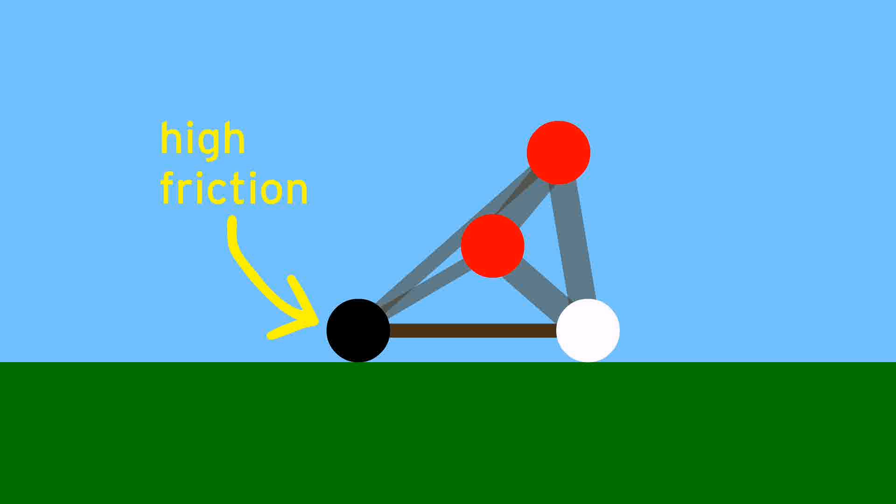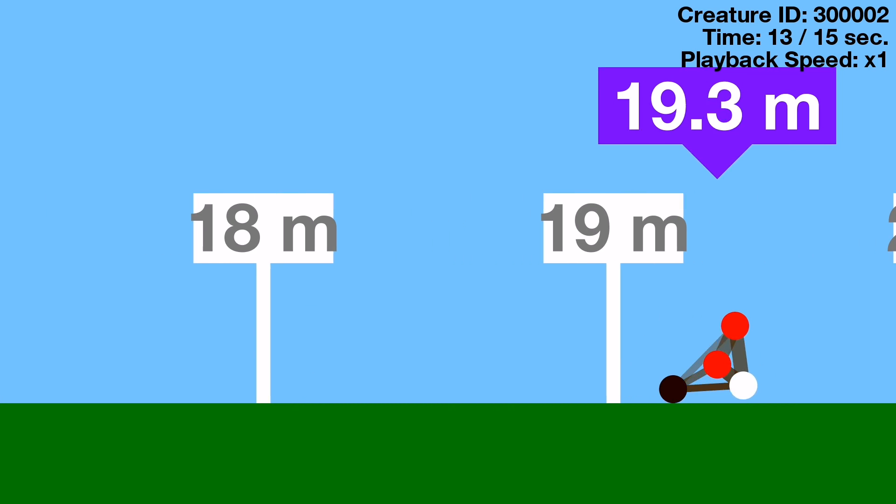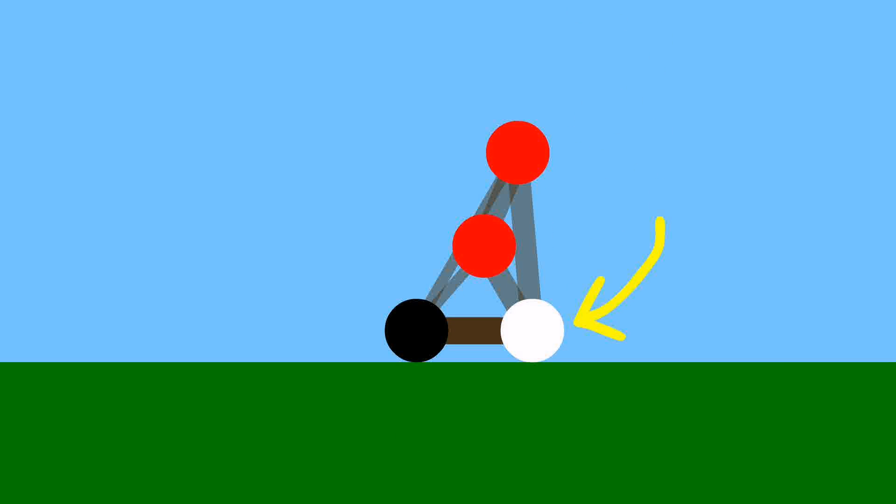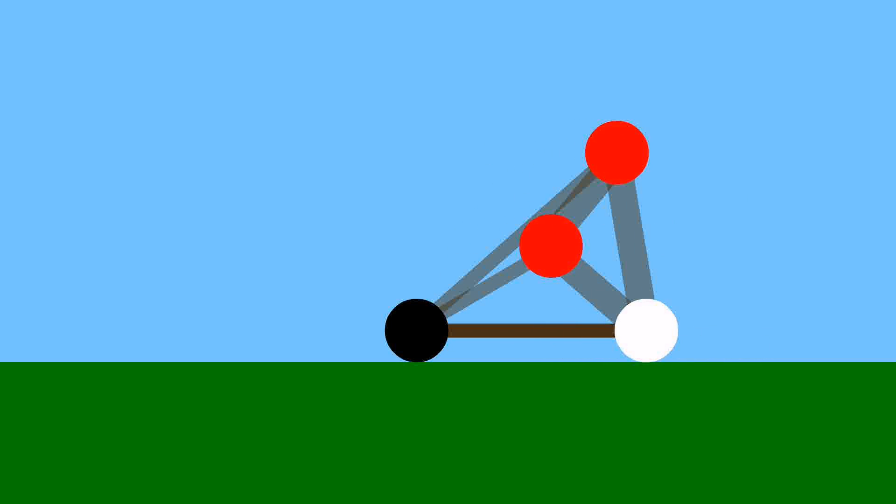As mentioned earlier, the left node has super high friction, acting as an anchor for the piston to push off of. It's very important that the right node in front has very low friction, so that it can easily be pushed forward against the ground by the piston.